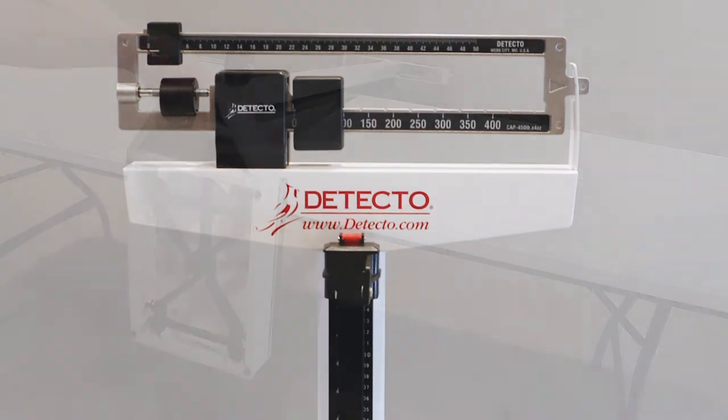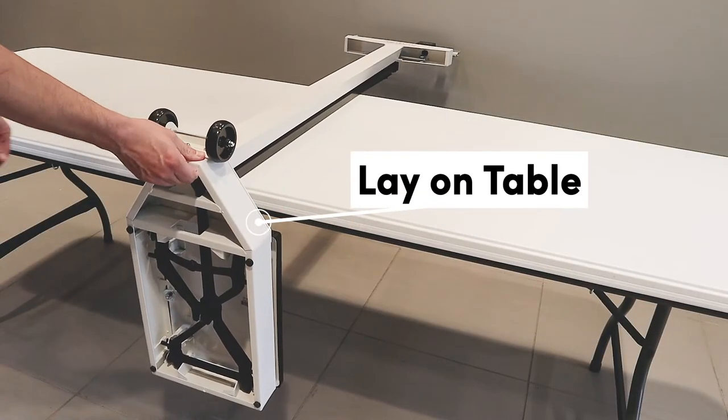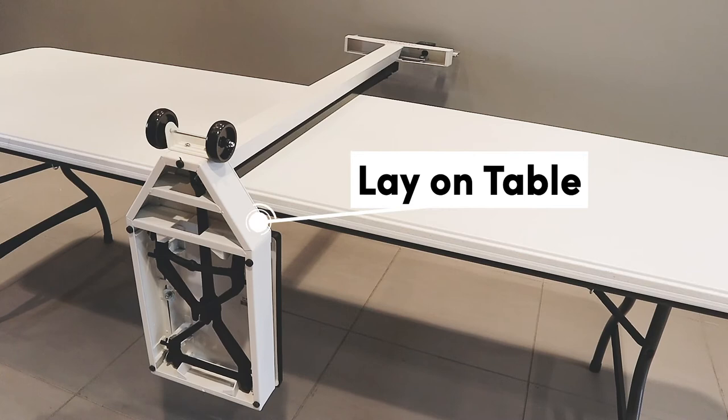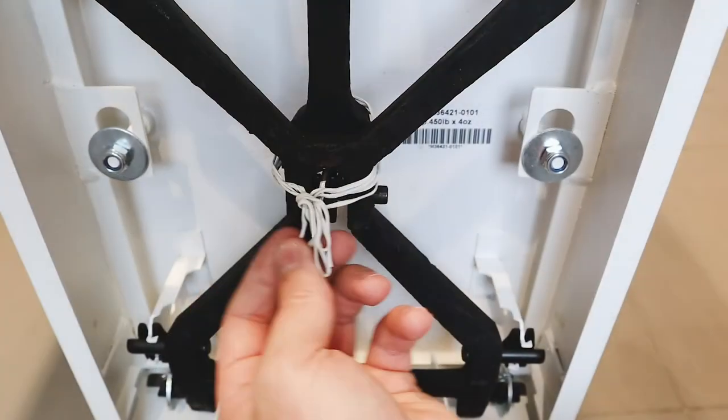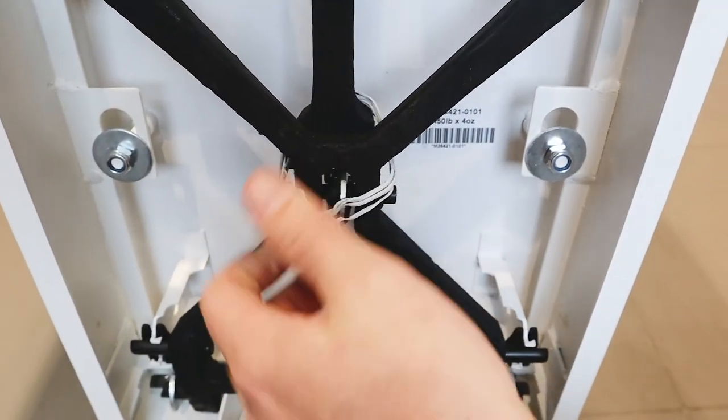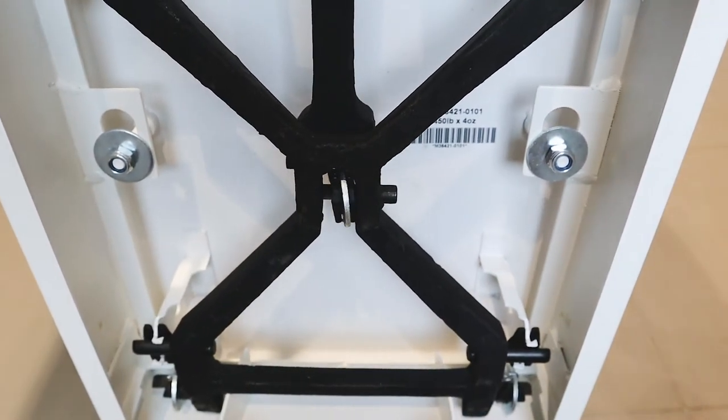Lay the scale on the table or workbench with the scale base hanging over the edge of the table or workbench to access the bottom of the scale base. Remove and discard the shipping tie wrap wires on the underside of the scale base.